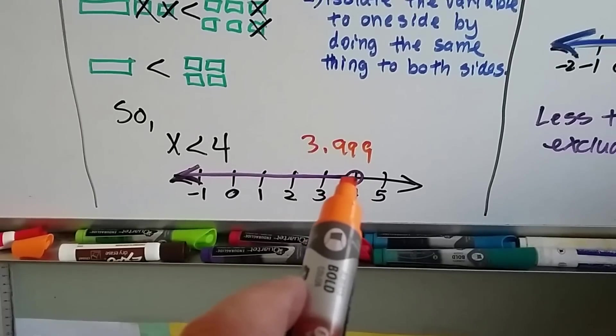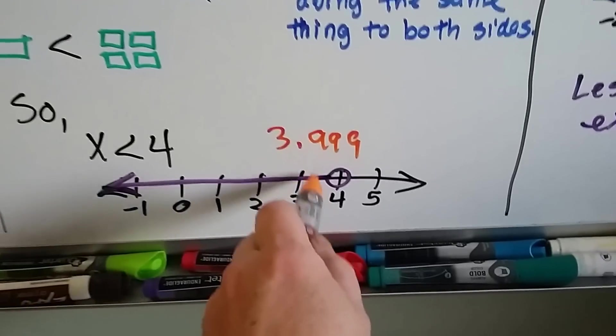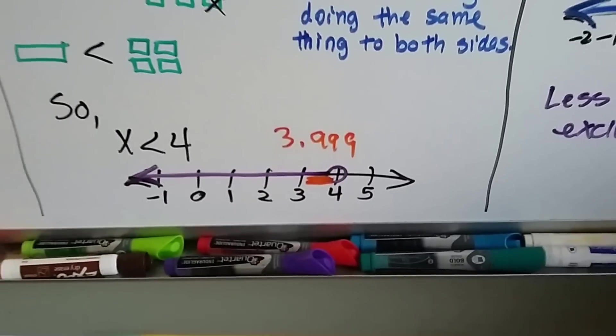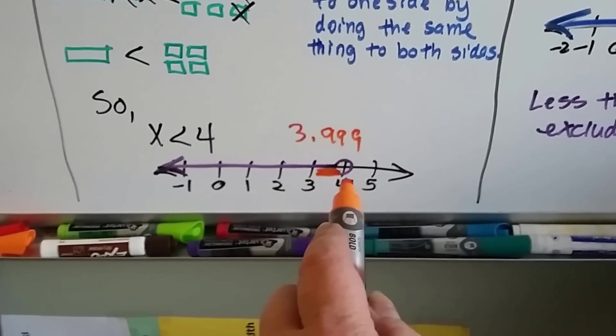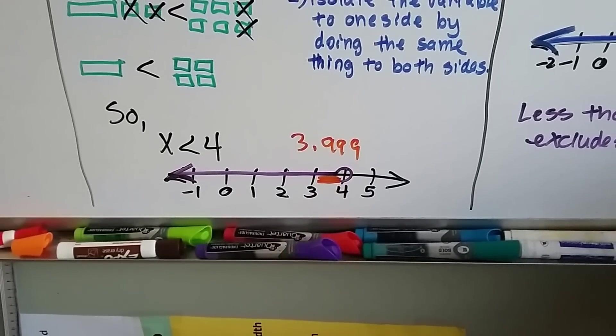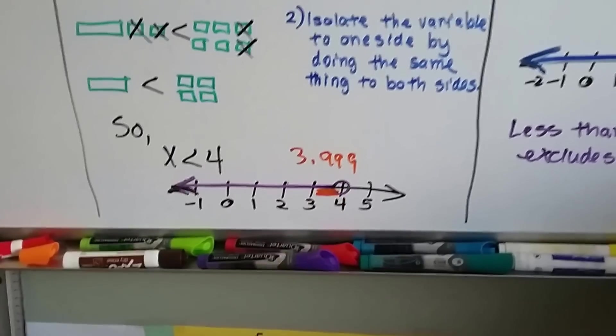That's why they circle the 4 and say it's anything even in between here. They're including in between the 3 and the 4 could be part of the answer, just as long as it's not 4 itself. It could be 3 1⁄2, 3 3⁄4, 3 7⁄8, 3 9⁄16, right? But it just can't be 4.